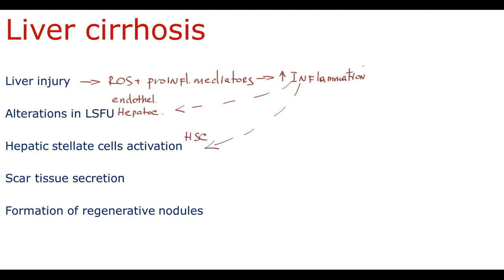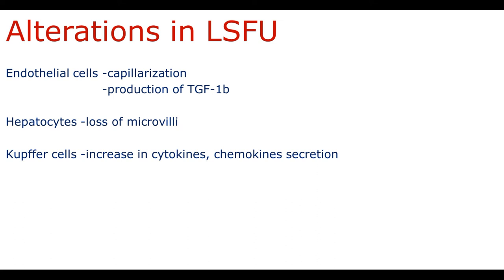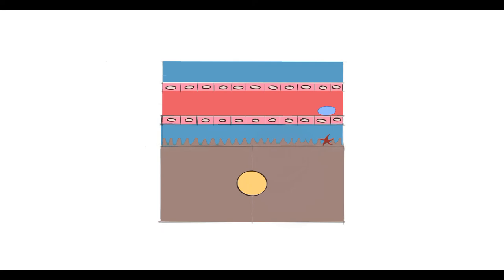These processes occur simultaneously, but to simplify, we can divide them into processes that occur with hepatic stellate cells and processes that occur with other cells of the liver sinusoid functional unit. First of all, there are substantial changes in endothelial cells — they undergo capillarization. Endothelial cells lose their fenestration, and if they lose their fenestration they start to look like a regular capillary vessel, that's why this process is named capillarization. In normal condition, fenestration facilitates nutrient delivery from blood to hepatocytes; if endothelial cells lose their fenestration, nutrient delivery to hepatocytes decreases, leading to hepatocyte energy depletion with progressive decrease in their function.